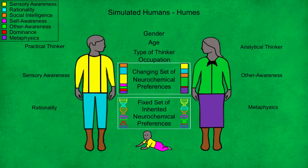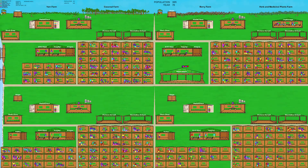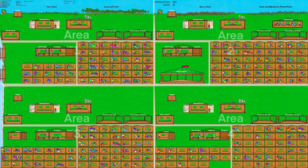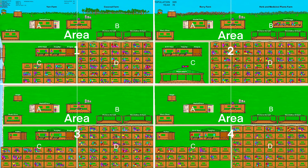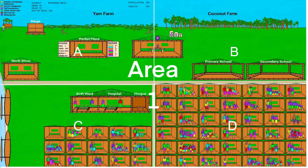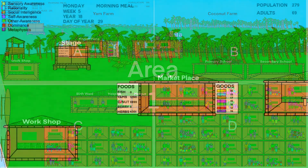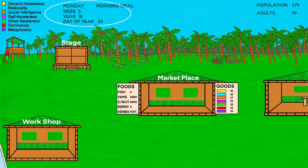Those are the key characteristics and attributes of the simulated humans. Now let's quickly review the layout and operational aspects of the simulation. This is the full screen view, which is divided into four areas, and each area is divided into four sections. We can look at any part of the simulation in detail by a simple press of a key. Area one, section A, has all the time and date information. Each simulated day is broken down into six time periods: morning meal, morning, midday meal, afternoon, evening meal, and evening.